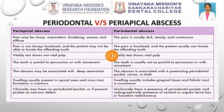In periapical abscess, the tooth often seems to be non-vital, whereas in periodontal abscess, the tooth remains vital. In periapical abscess, the pain is not localized and the patient cannot localize the pain, whereas in periodontal abscess, the pain is localized. In periapical abscess, the pain may be sharp, intermittent, throbbing, severe, and diffuse, whereas in periodontal abscess, the pain is usually dull, steady, and continuous.